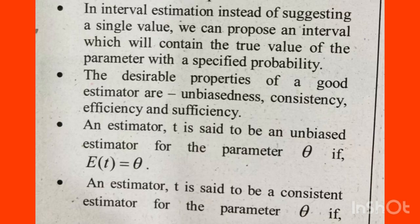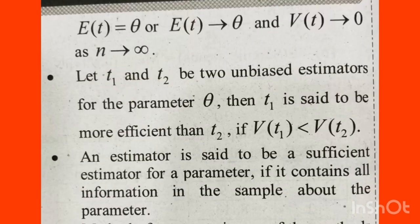An estimator t is said to be an unbiased estimator for the parameter theta if E(t) equals theta. For consistency, E(t) equals theta, V(t) equals 0, and n tends to infinity — meaning the variance of t will be 0 as n becomes infinite.